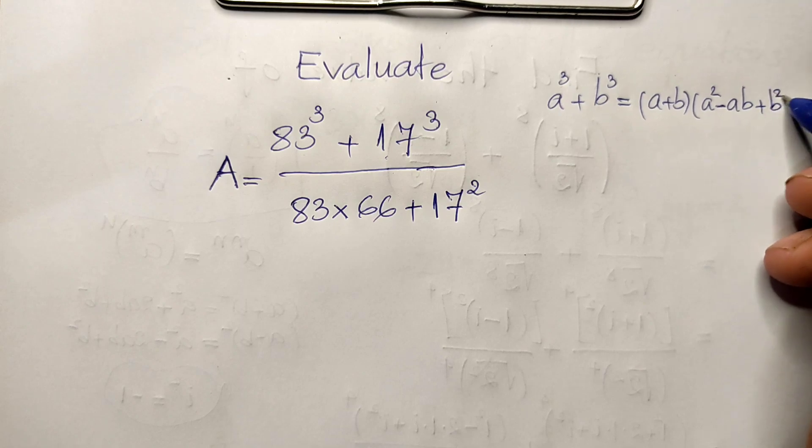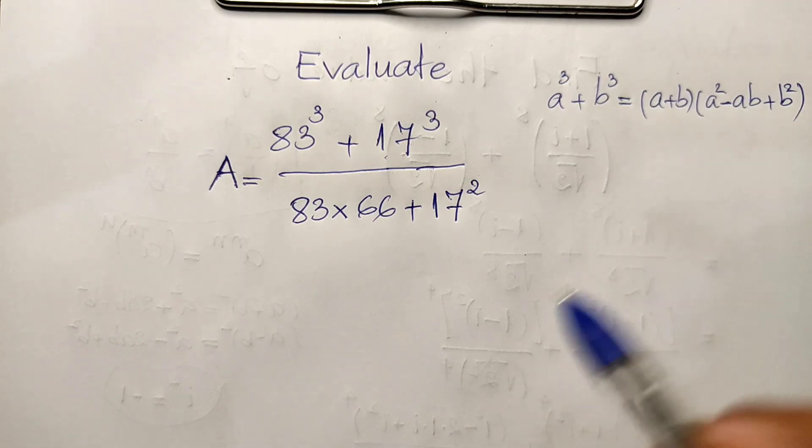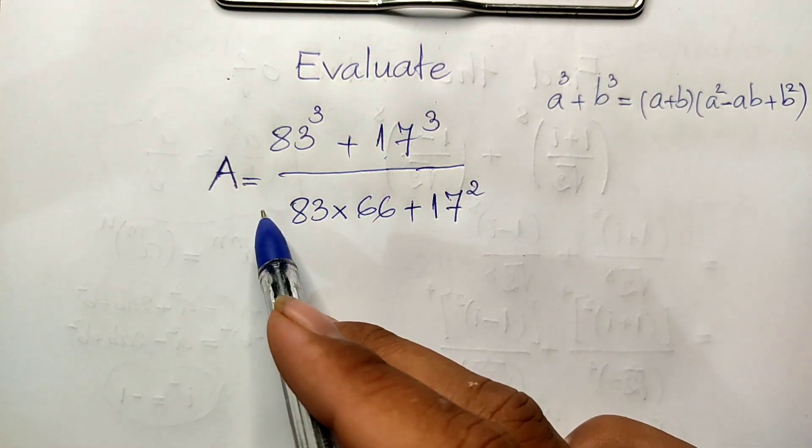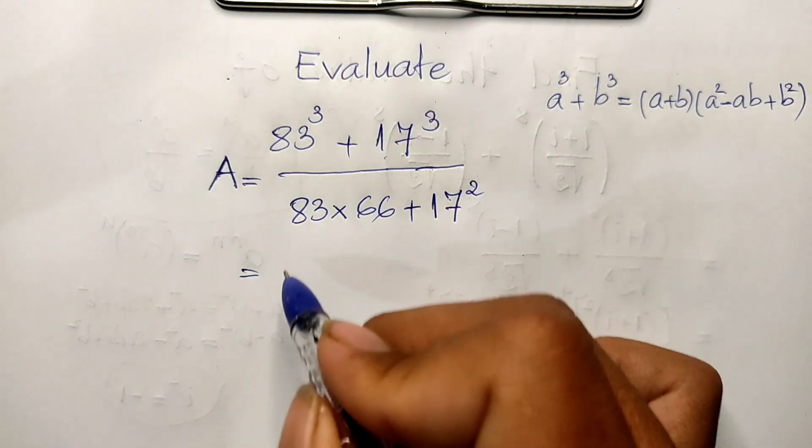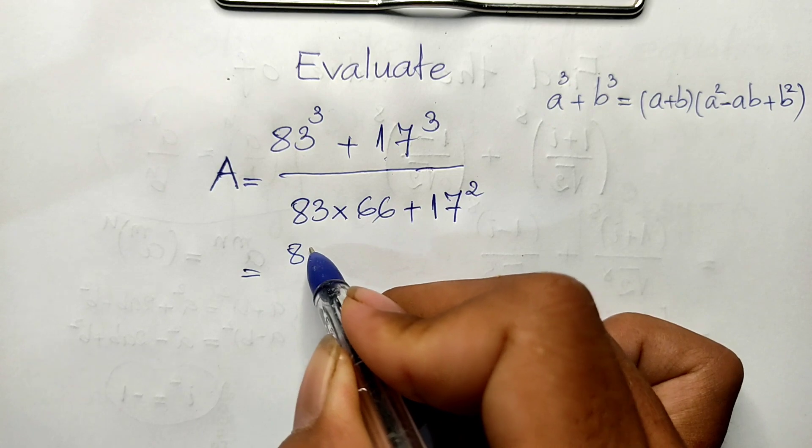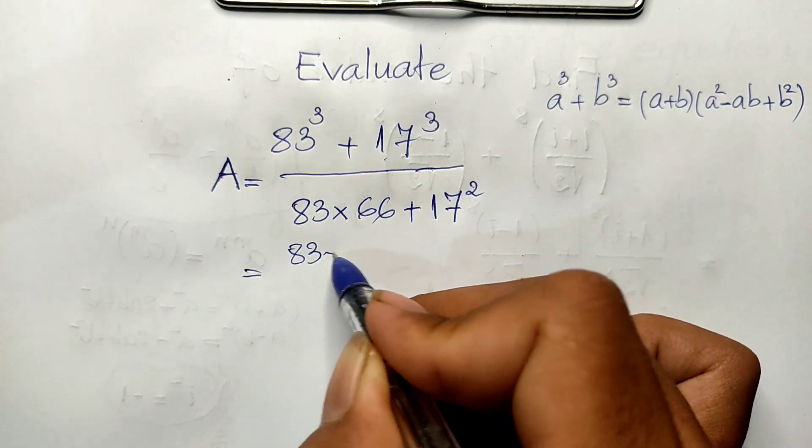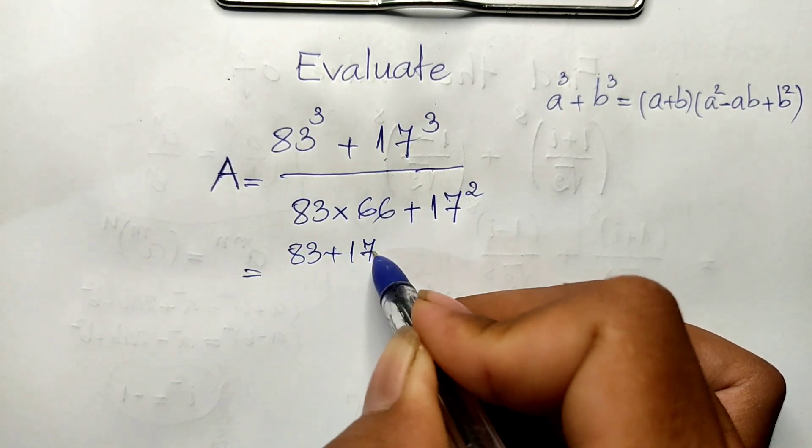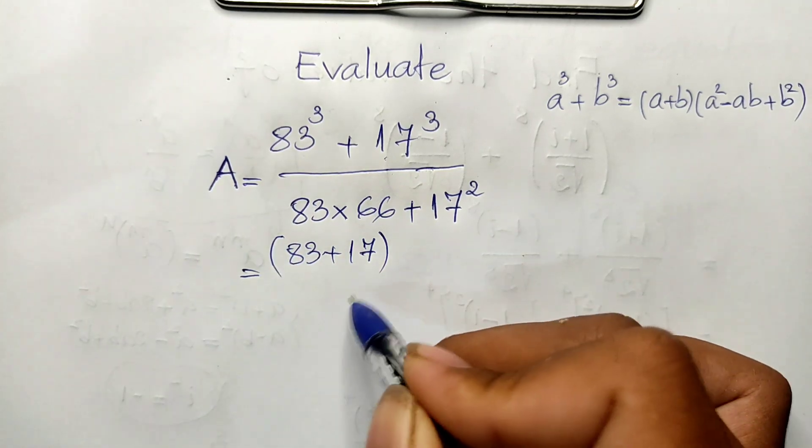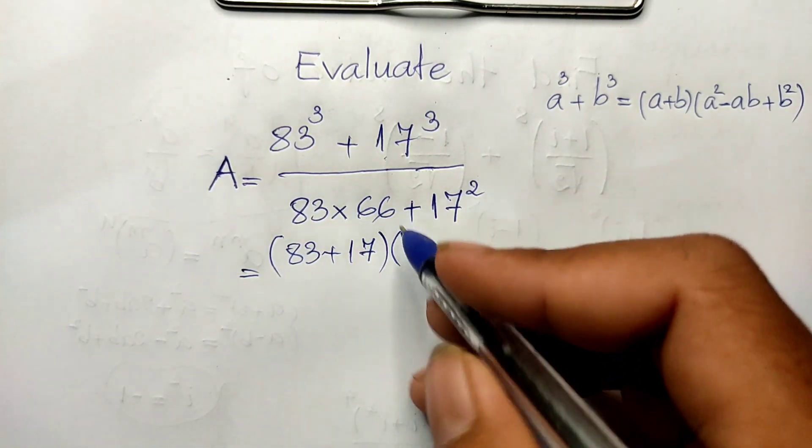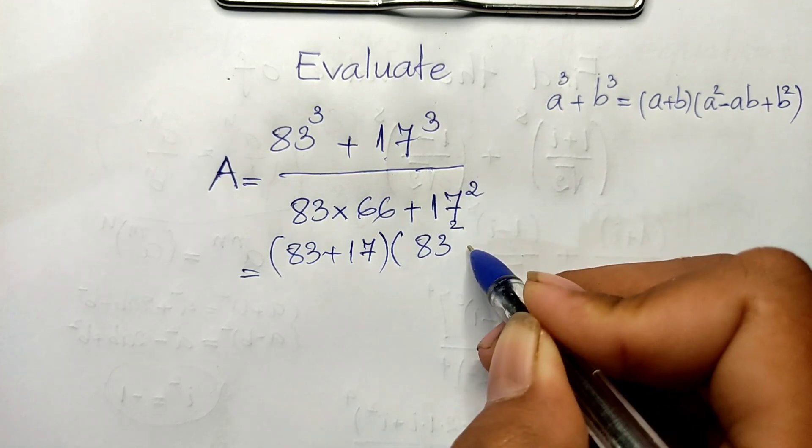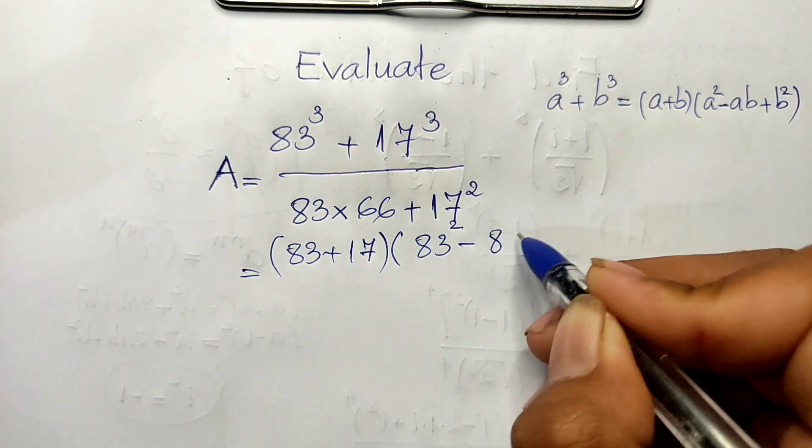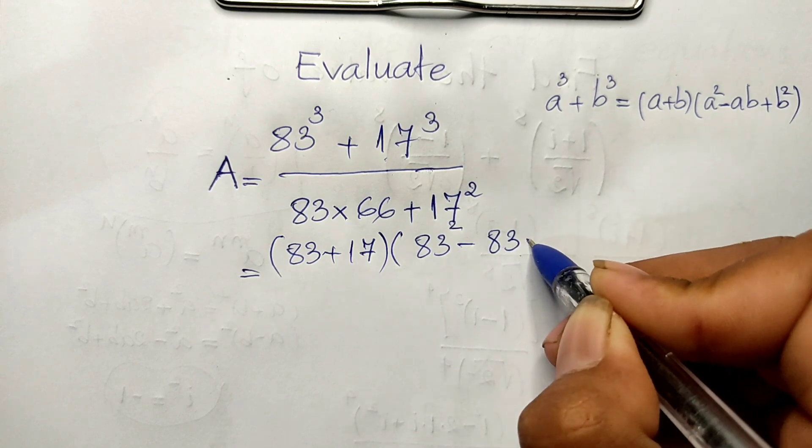So our expression equals (83 plus 17) multiplied by (83 squared minus 83 multiplied by 17 plus 17 squared).